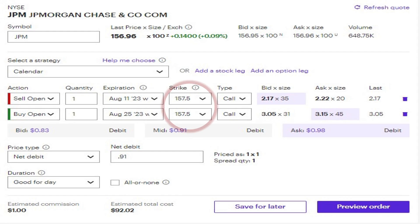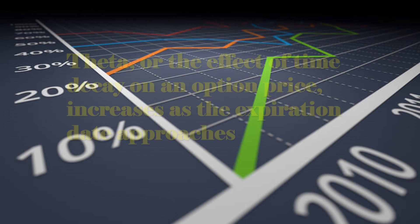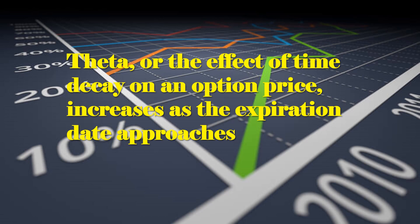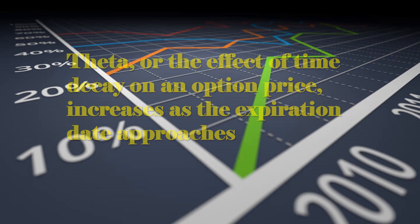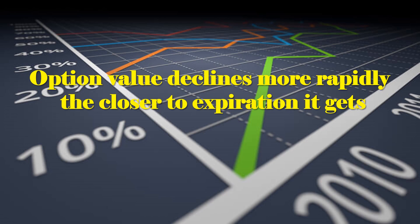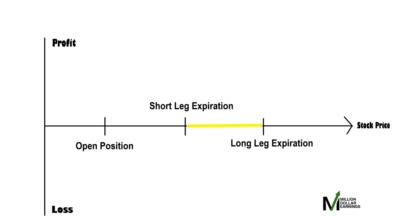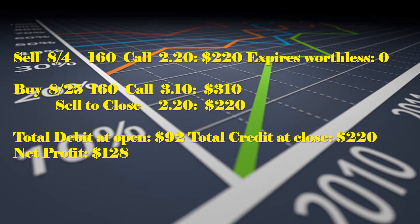Now, as long as the stock price remains below right around $157 at the time of the short option expiration, the short option will expire worthless. I'll now be left with the long option. Theta, or the effect of time decay on an option price, increases as the expiration date approaches. If I open this position and then two weeks later the short position expires, I now have an additional two weeks before the long position expires. As long as the stock price hasn't dropped, it's reasonable to assume it might still have around two-thirds of its original value left.